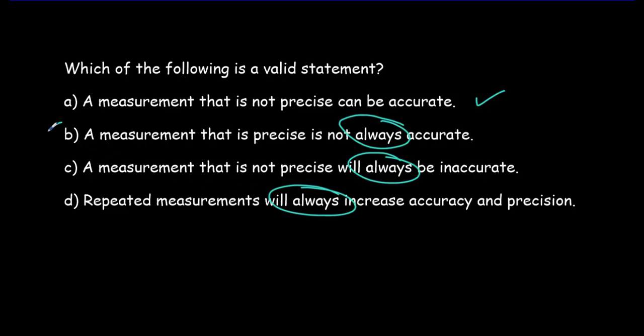But let's go through B, C and D and see why they are false. In B, a measurement that is precise might or might not be accurate, right? They're independent of each other. In C, a measurement that is not precise will always be inaccurate. No, once again, precision and accuracy are independent of each other. One does not imply the other.